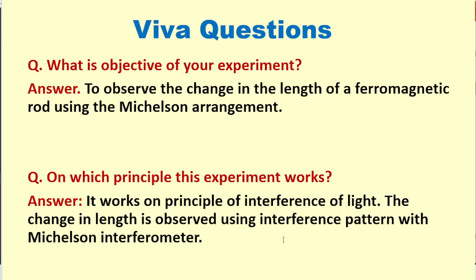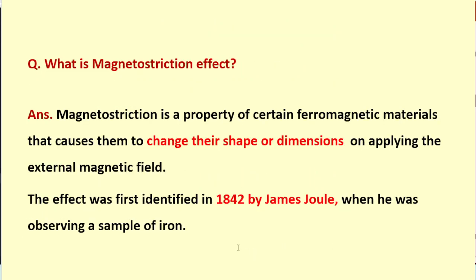What is magnetostriction effect? Magnetostriction is a property of certain ferromagnetic materials that causes them to change their shape and dimensions on applying external magnetic field. This effect was identified in 1842 by James Joule when he was studying a sample of iron.